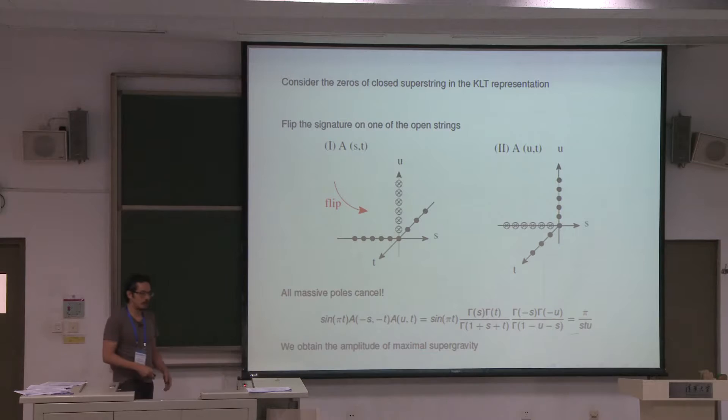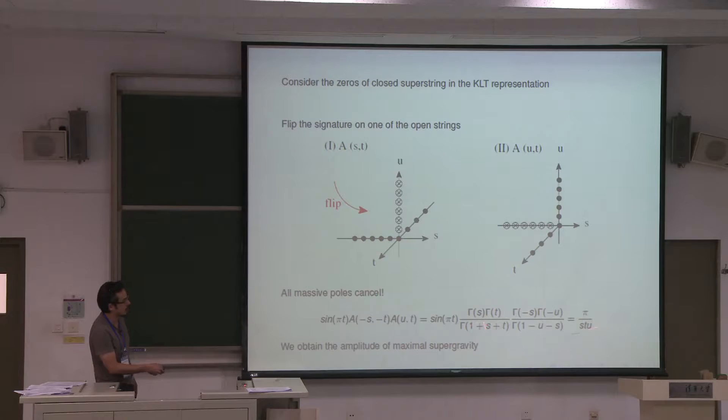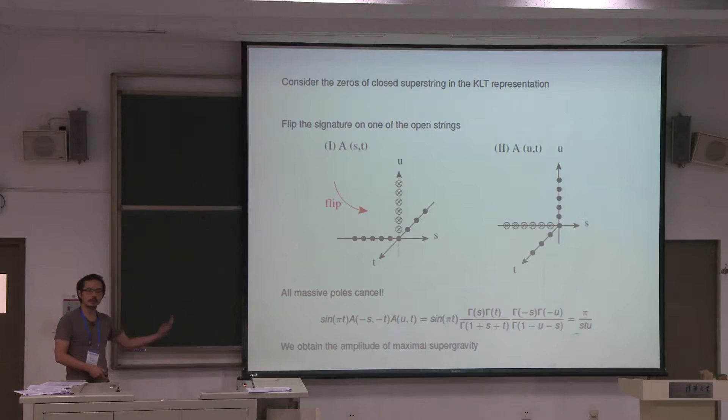You don't cancel everything because the region around zero itself doesn't contain any zero. But in the end, once you do this flipping — this is just simple identities of gamma functions — you see that the result is just a function of 1/(stu), which after multiplying the pre-factor gives you the gravity amplitude, more precisely the supergravity amplitude. So just by doing this flip, you get the field theory amplitude.